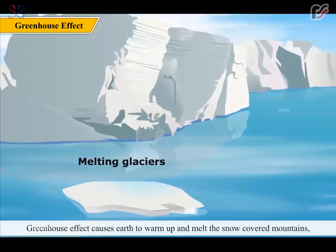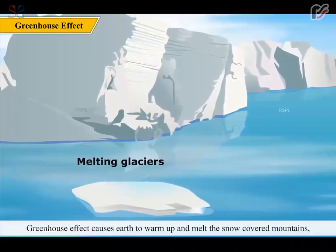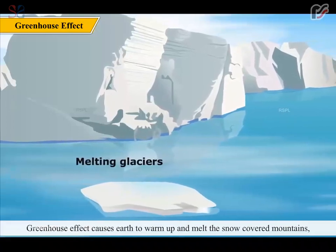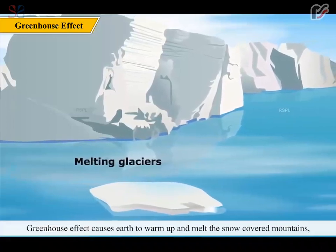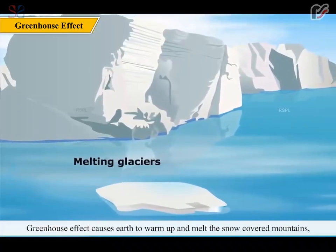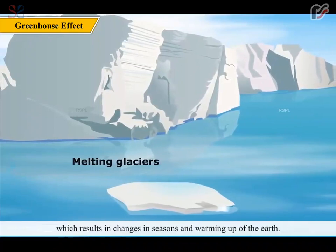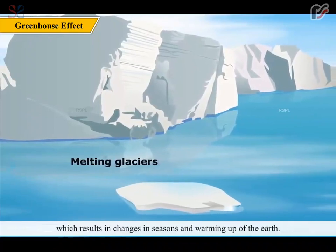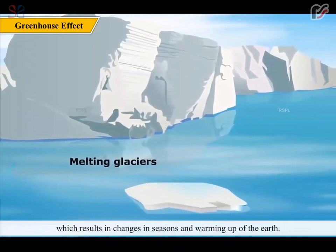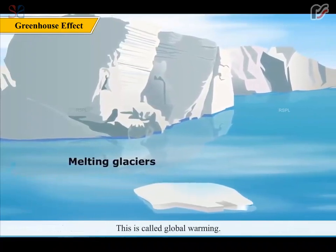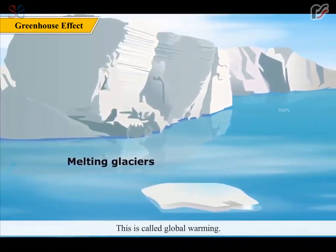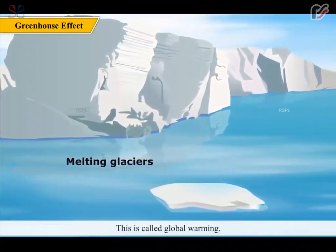The greenhouse effect causes the earth to warm up and melt the snow-covered mountains, which results in changes in seasons and warming up of the earth. This is called global warming.